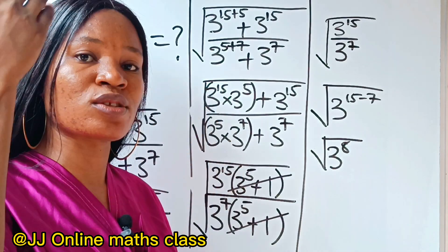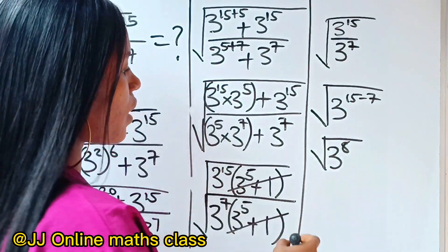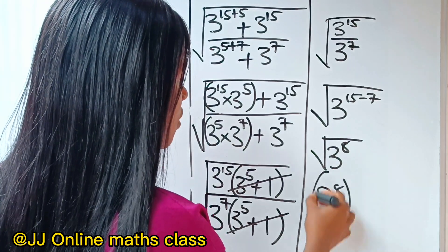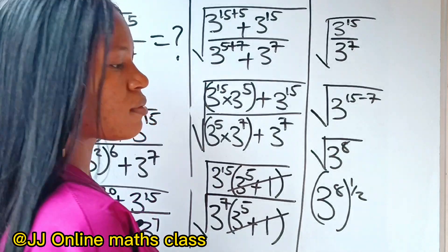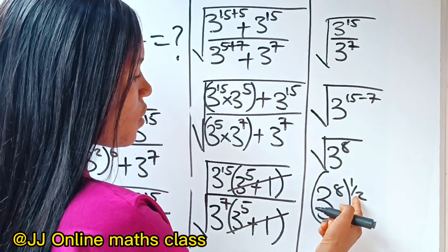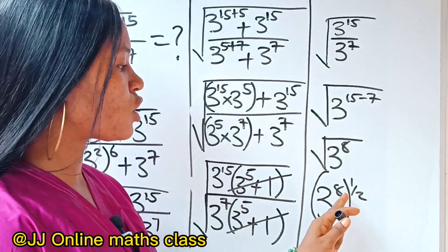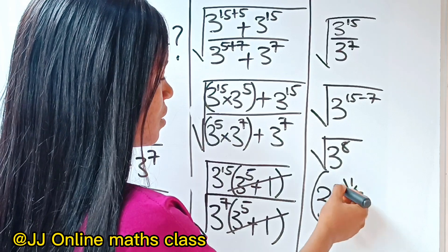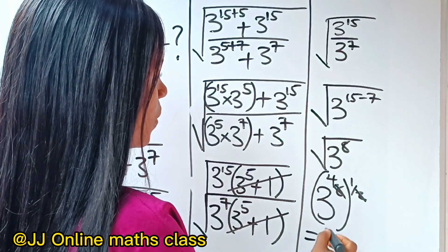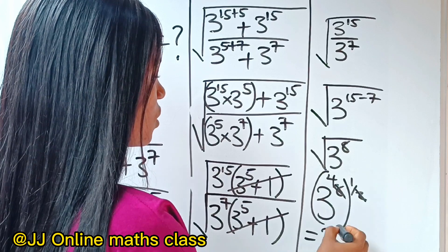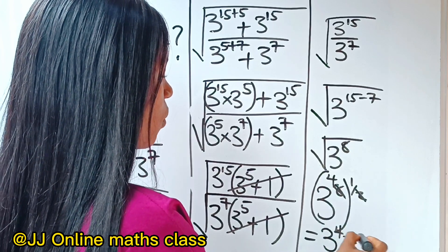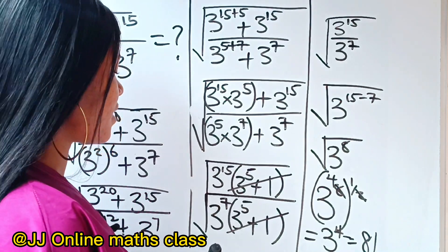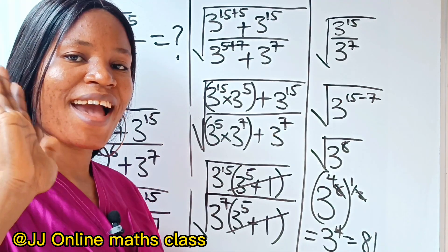We know that square root of anything is that value raised to the power of half. So we write this as 3 to the power of 8, raised to the power of half. When you multiply 8 by a half, you get 4. So we have 3 to the power of 4, which equals 81. Thank you so much for watching and do have a great day, bye!